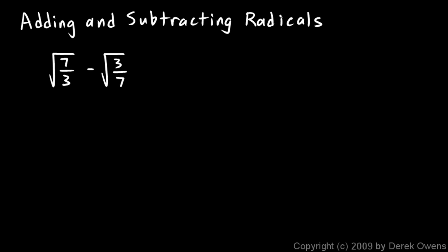We're back again, still doing some example problems with adding and subtracting radicals. In this example, I have the square root of 7 thirds minus the square root of 3 sevenths. There are two issues in this problem: one is the fact that I have fractions under my radical, and the other is that they aren't the same denominator. I have to have the same denominator if I'm going to combine them.